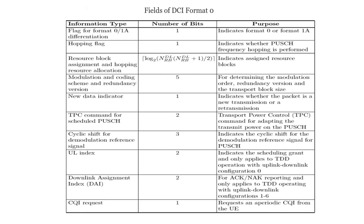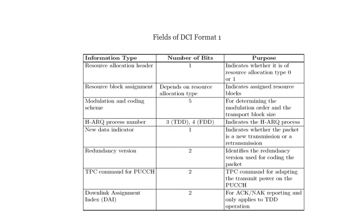This slide shows the fields of DCI format 0 — the information type, the number of bits used, and the purpose. This also gives the fields of DCI format 1, with what information is carried, the number of bits used, and the purpose.